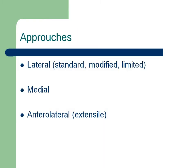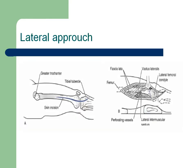How do we approach these fractures? Options include lateral — standard, modified, or limited — medial, and anterolateral approaches. For the lateral approach, the incision comes from the greater trochanter line going to the tibial tubercle. We must identify the perforating vessels, the lateral intermuscular septum, the fascia lata, and the lateral femoral condyle, then place a Bennett retractor to reach the articular and fracture surfaces.